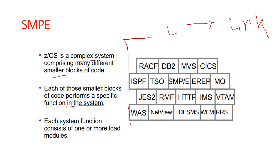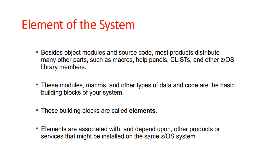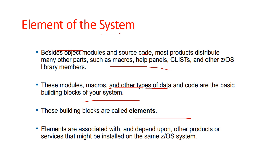Besides object modules and source code, most products distribute many other parts such as macros, help panels, CLISTs, and other z/OS library members. These modules — like macros and other types of data and code — are the basic building blocks of your system. All of these building blocks are called elements. Elements are associated with and depend upon other products or services that might be installed on the same z/OS system, and they describe the relationships that software has with other products or services on the system.